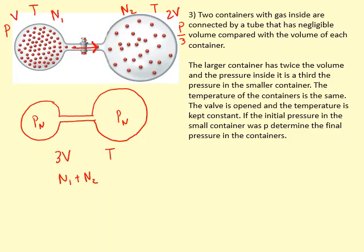So now I can set up equations. I do gas equations for each situation, for each container. If we start off with this one, we get PV equals N1 kT. And then the second larger container, you get P over 3 times 2V equals N2 kT.